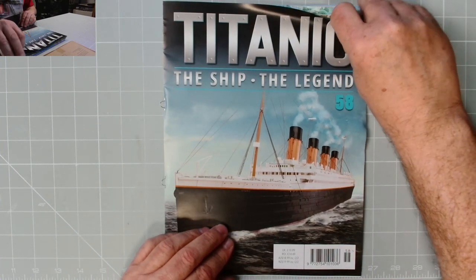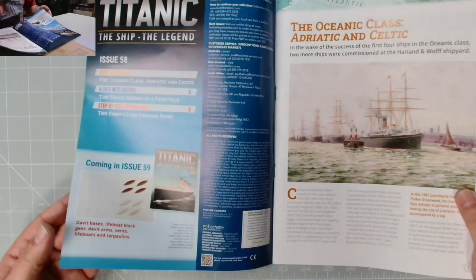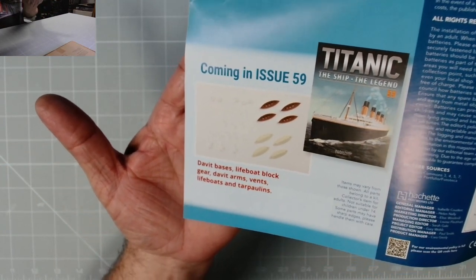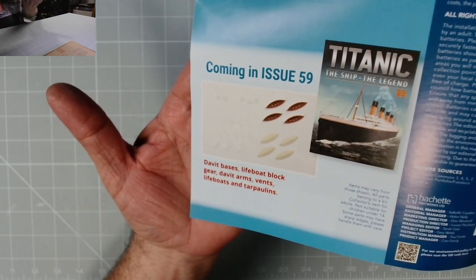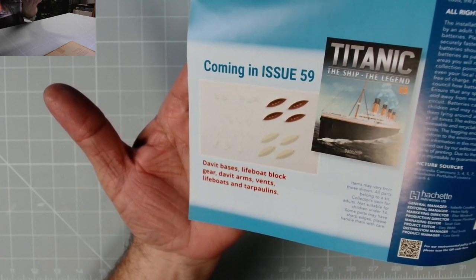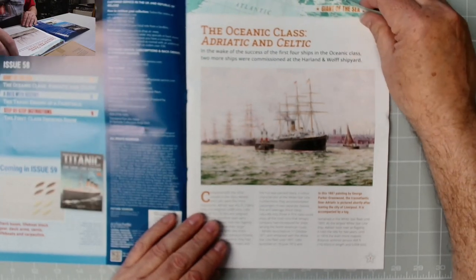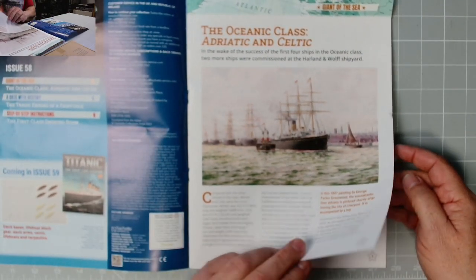Here we have issue 58. On the inside cover we've got coming in issue 59: davit bases, lifeboat block gear, davit arms, vents, lifeboats and tarpaulins. Excellent stuff.